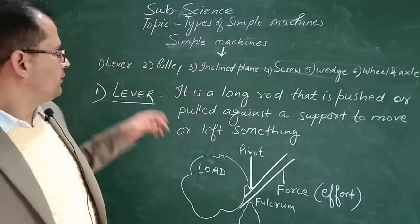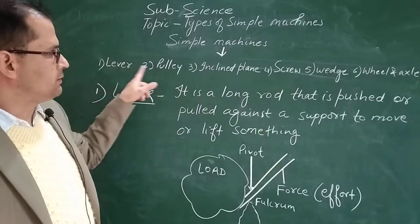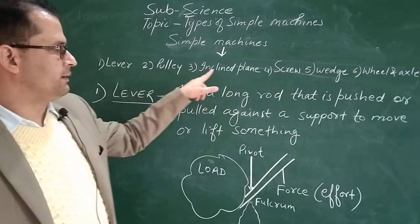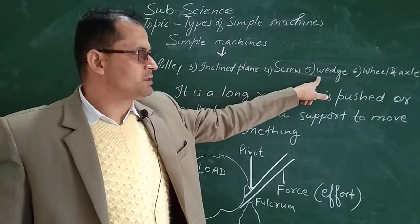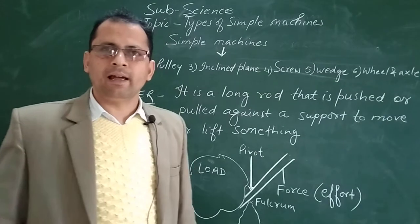Again I am repeating: first lever, second pulley, third inclined plane, fourth screw, fifth wedge, and sixth is wheel and axle.